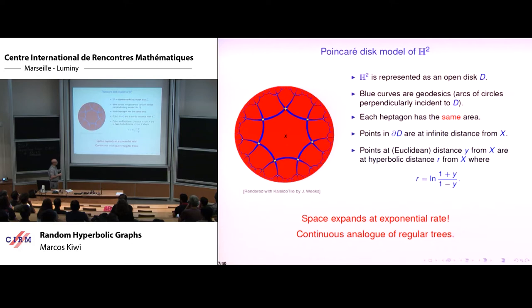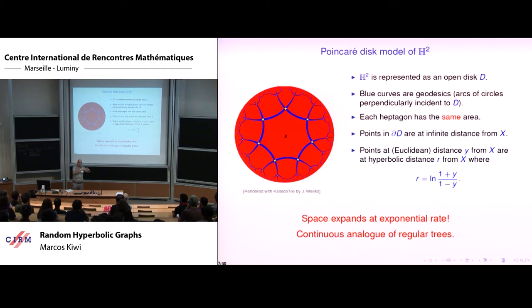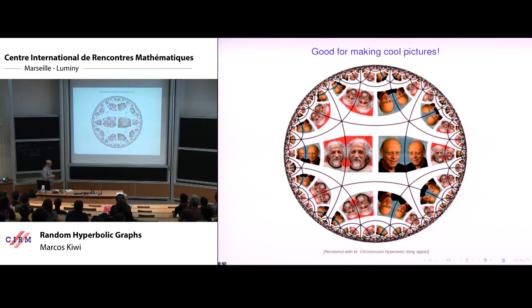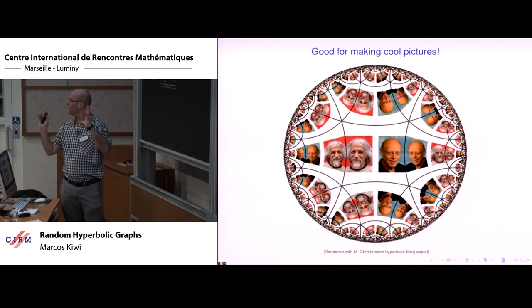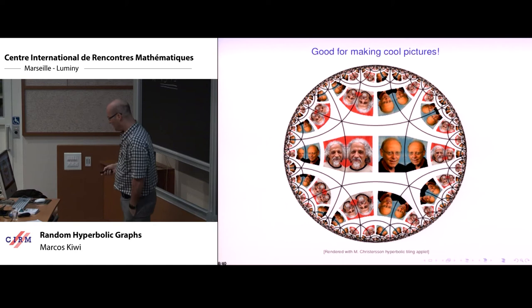If you are at Euclidean distance y from the origin in the Poincaré model, the hyperbolic distance is given by a specific formula. The key fact is that space expands at an exponential rate. You can think of hyperbolic space as a continuous analog of a regular tree — if you lay a tree in hyperbolic space, the leaves have plenty of room and won't come together, giving lovely drawings.